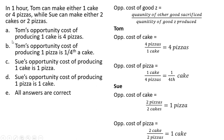Looking at the answer choices: Tom's opportunity cost of producing one cake is four pizzas — true. Tom's opportunity cost of producing one pizza is one-fourth of a cake — also true. Sue's opportunity cost of producing one cake is one pizza — true. And Sue's opportunity cost of producing one pizza is one cake. So all these answers are correct.